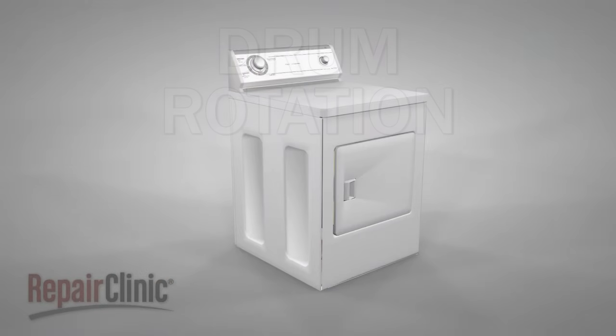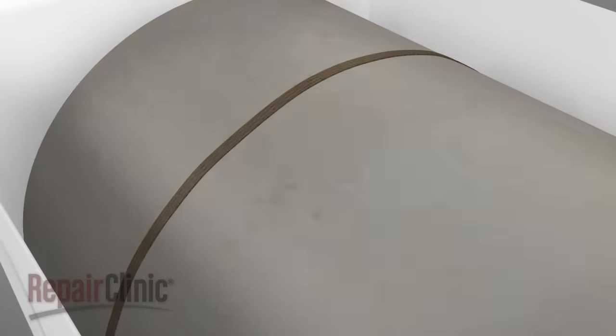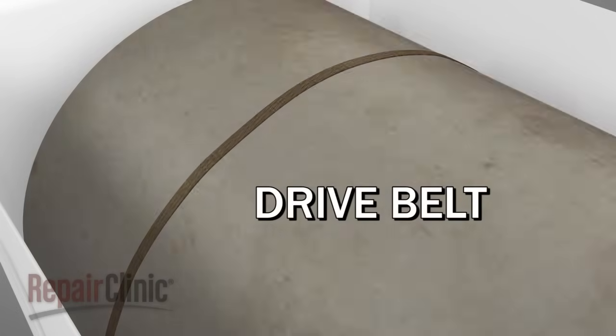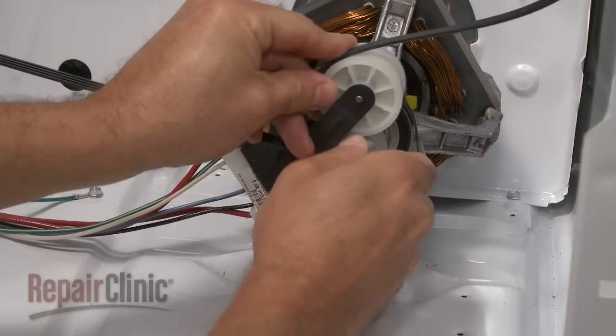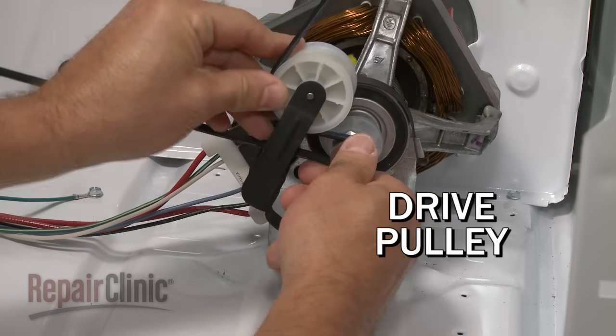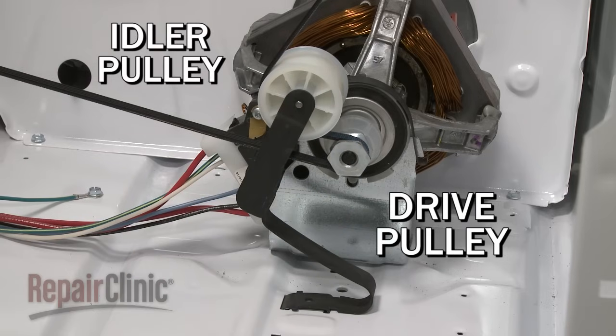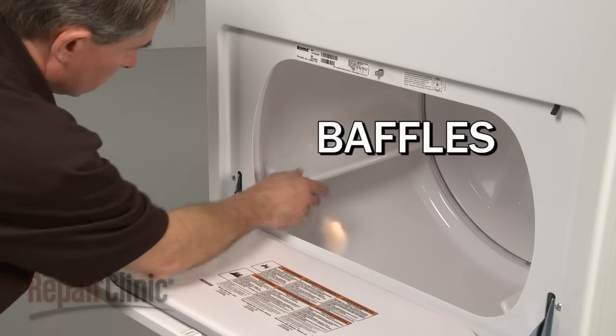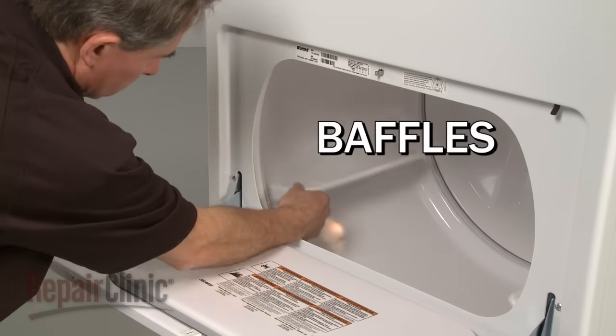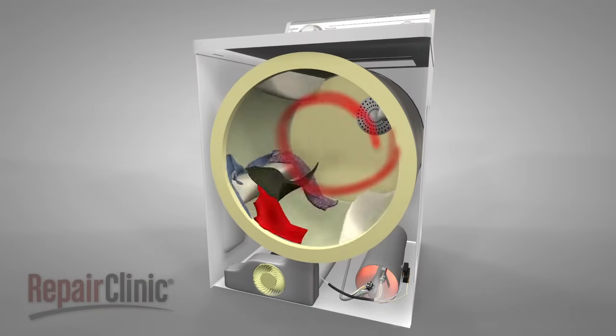As the blower wheel draws the air into the dryer and the burner assembly heats it, the drum is rotated by a drive belt. The belt goes around the entire drum and is looped onto a drive pulley on the motor, which drives the belt, and around an idler pulley, which puts tension on the belt. The drum has baffles inside to lift and rotate the clothes, which is an important step in the process as it allows the heated air to dry the clothes evenly.